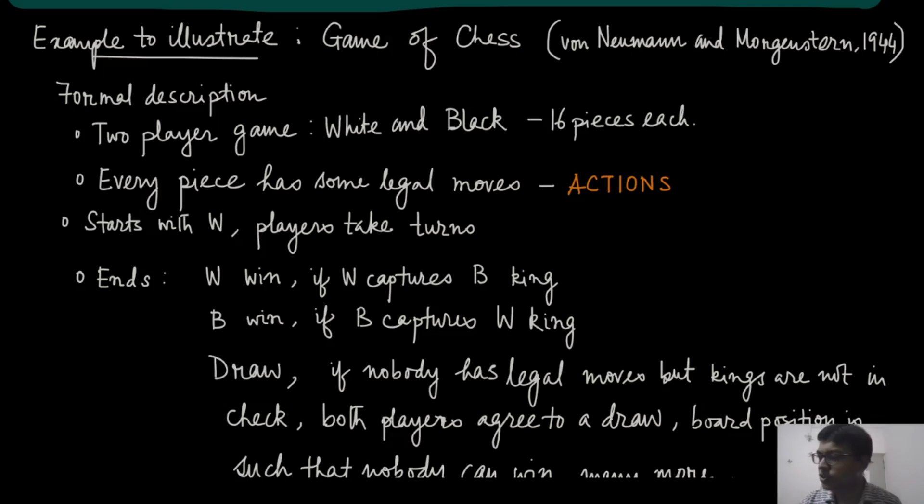So this is a two player game. There are two players. One is playing with the white pieces and the other one is playing with the black pieces. And there are 16 pieces for each of these players. Every piece has some legal moves which we are going to call as actions. And the game starts with the white player and then players take turns.